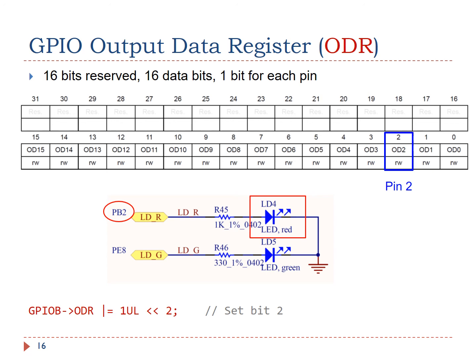The output data register is easy to understand. This register has the upper 16 bits reserved. It has 16 data bits, with 1 bit for each pin. Because the red LED is connected to pin 2, to turn on the LED, we need to set bit 2 of the output data register to 1.